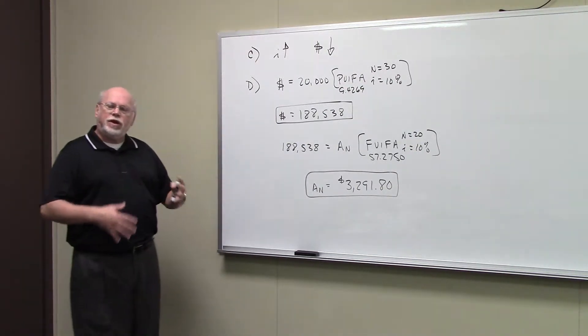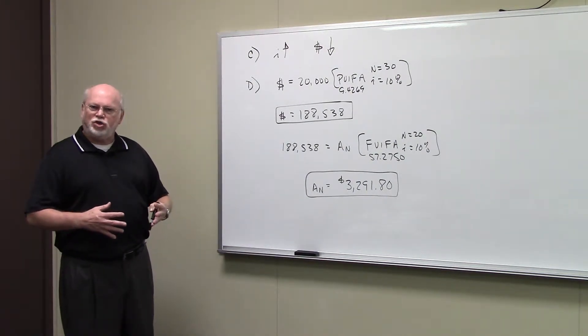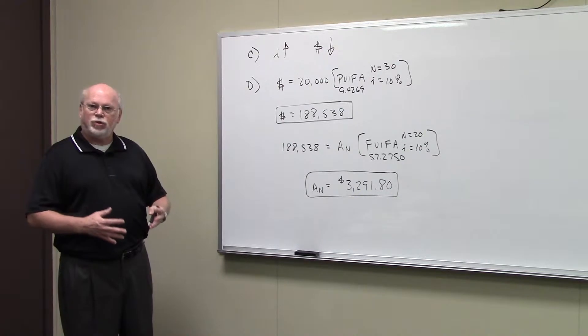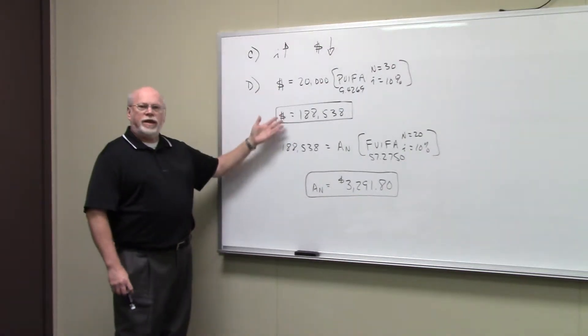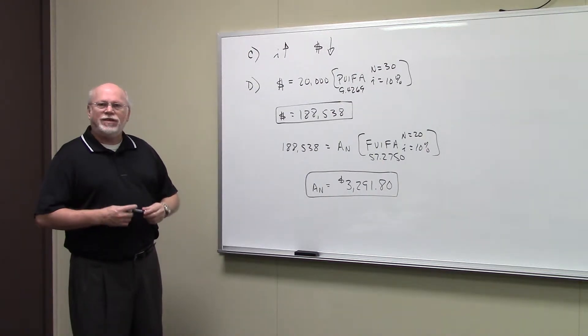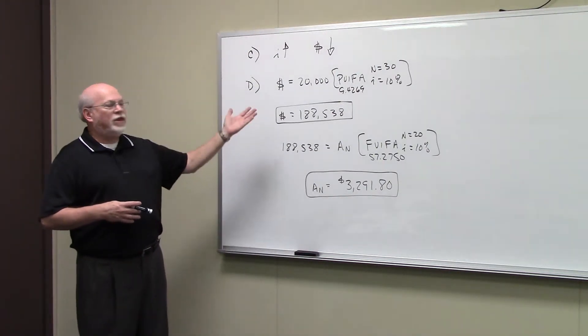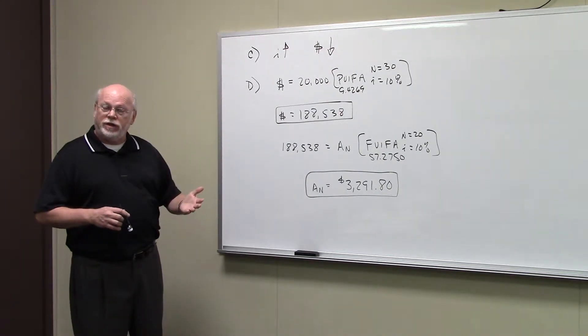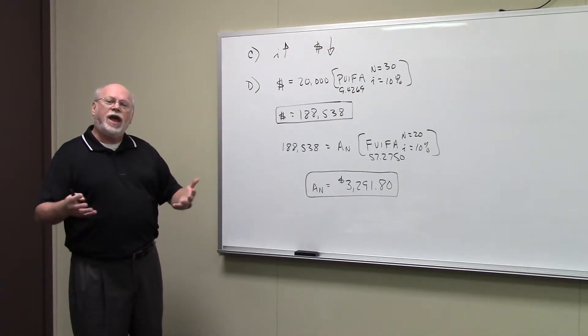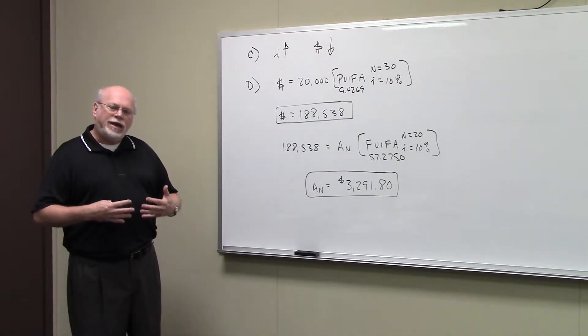Part D now, they're combining a couple of different kinds of problems you see in a retirement situation. The first part of that question says if we earn 10% on all our money, and we want to have $20,000 a year for 30 years in retirement, how much money would we have to have at the beginning of our retirement?